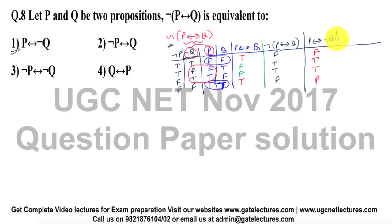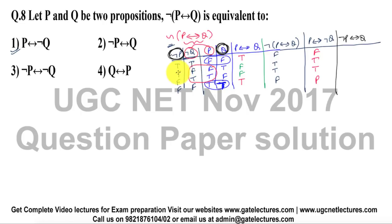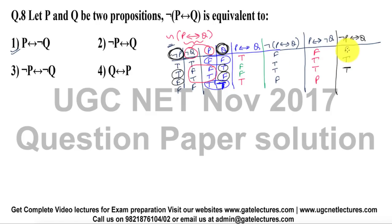Let us check the other options. The next option is negation of P double implication of Q — we are considering this value and this value. For a double implication, when both are true: here it is also true and this is also true, so again we have true, true, and the remaining two will be false.